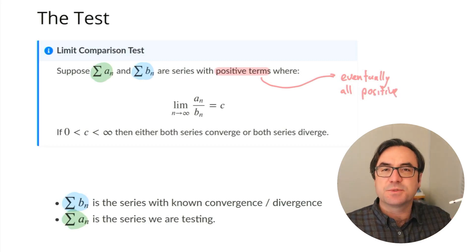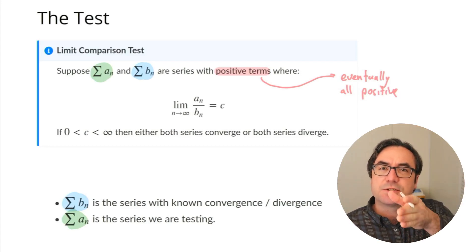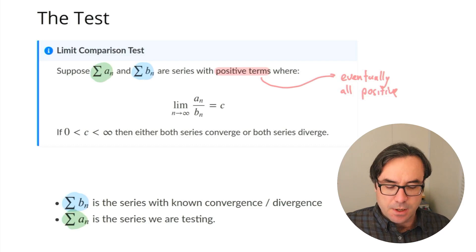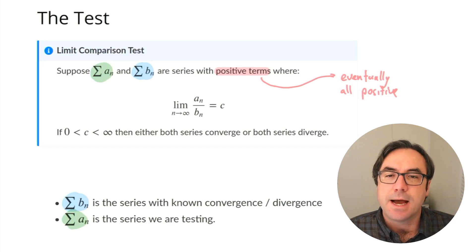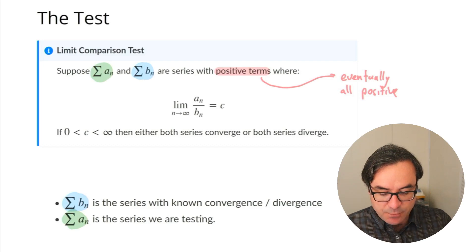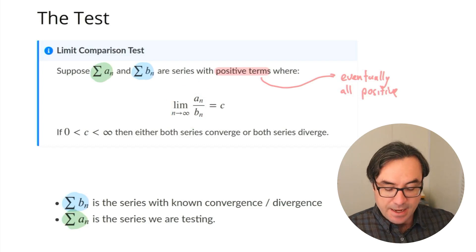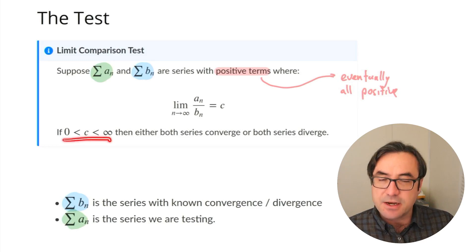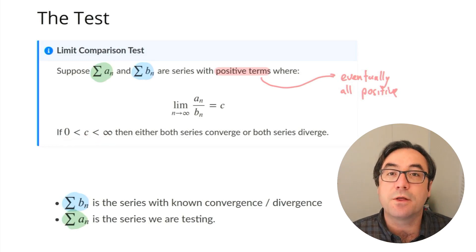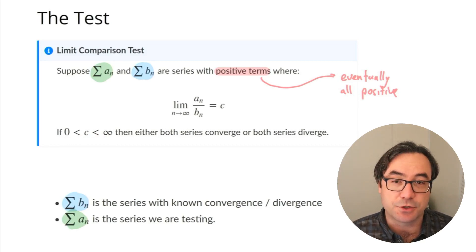We have our sequence, our list of terms. It's okay if a few at the beginning are negative, as long as we hit a point in the list where after that they're all positive. That's the necessary condition to check before we use this test. The actual meat of the test is that we calculate the limit of an divided by bn as n goes to infinity. If we calculate that limit and end up with a finite number c that is greater than zero, then both series either both converge or both diverge — they do the same thing.